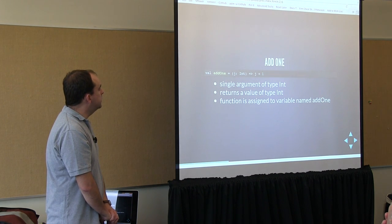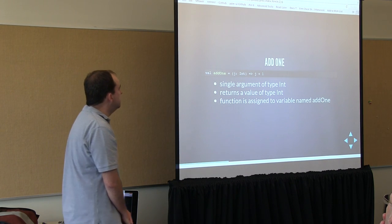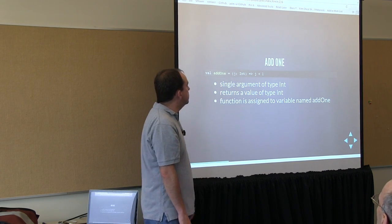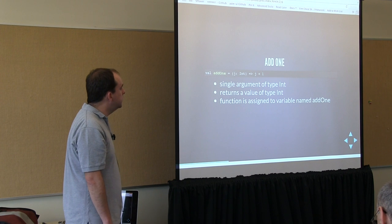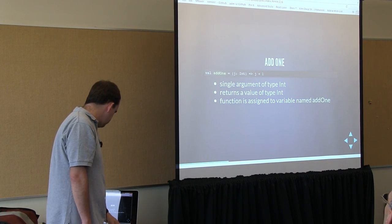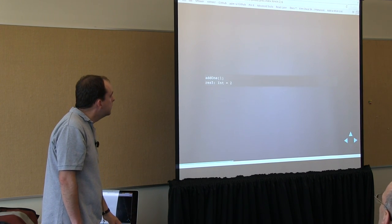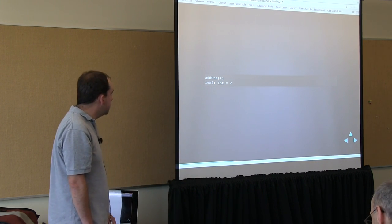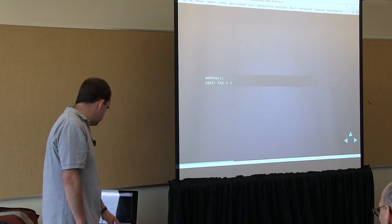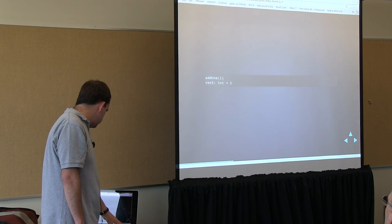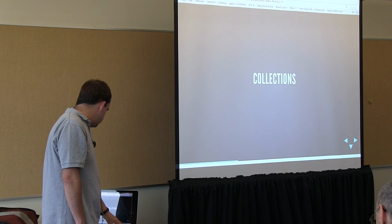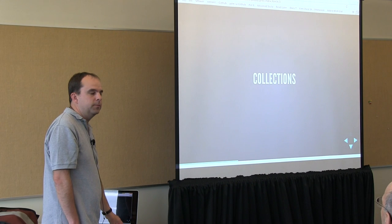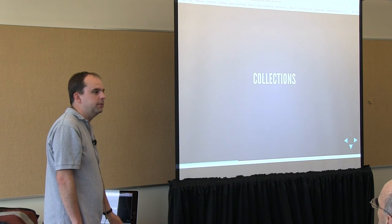Getting to a function that does a little more work — we could define an add-one function that takes in a value, with one parameter, and returns that value plus one. Then we would use it by calling the add-one function, passing in a value, and getting back an integer. Now I want to move on to the collections library and start making use of these functions.